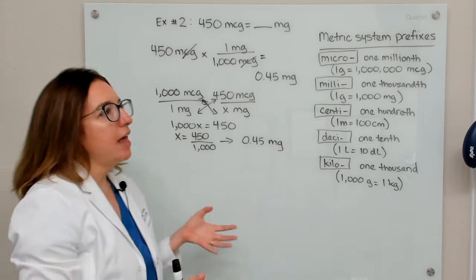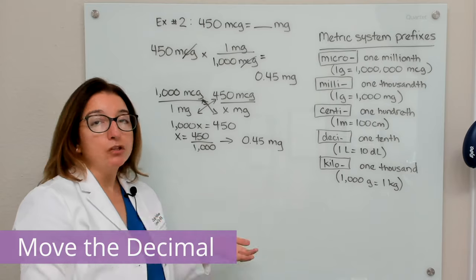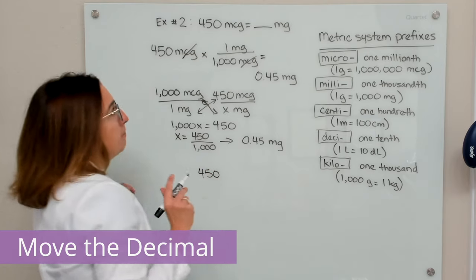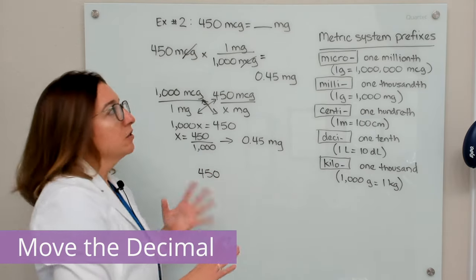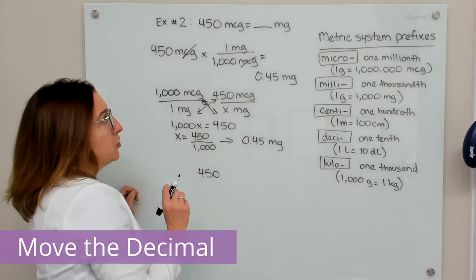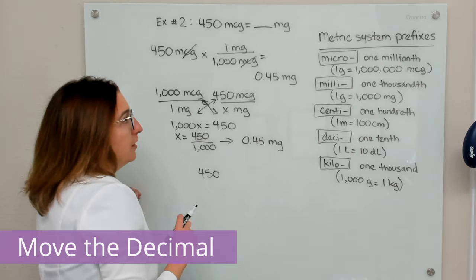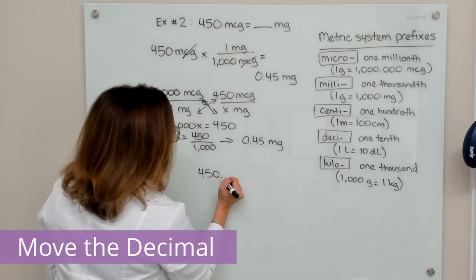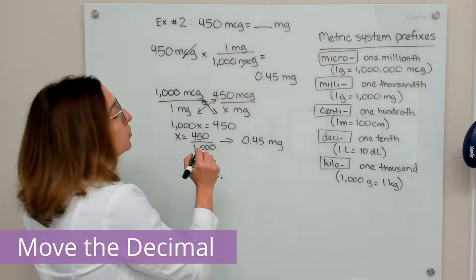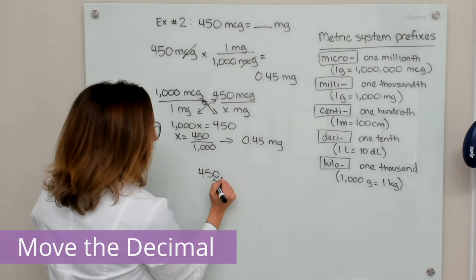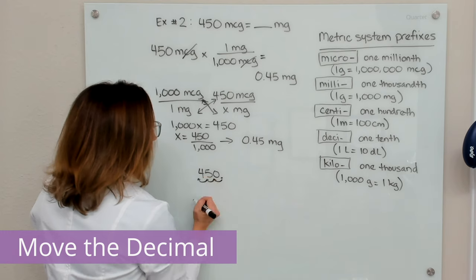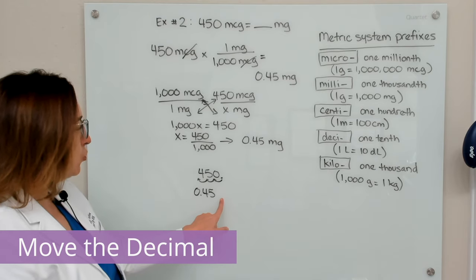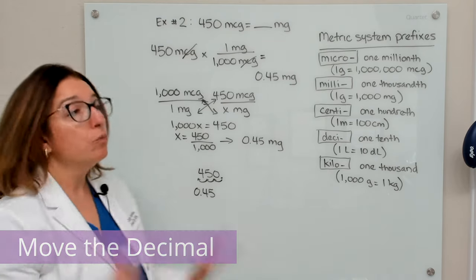Finally, let's use the move the decimal point method. We have 450 micrograms and we want to get to milligrams. We are going from a smaller unit of measure to a larger unit of measure with a change of three units, so we move the decimal point — which is assumed to be after the zero — to the left three places: 1, 2, 3. We end up with 0.45, with a leading zero and no trailing zero.